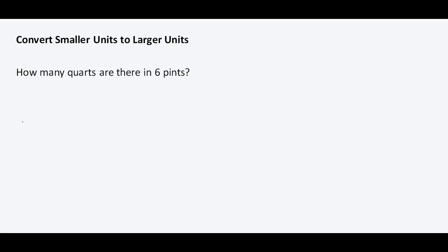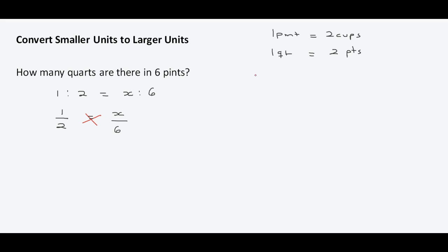Next question: how many quarts are there in 6 pints? We know that 2 pints make 1 quart, so the ratio of pints to quarts is 2 to 1. So 1 over 2 is equal to x over 6. Cross multiplying gives us 2 times x equal to 6 times 1. Dividing both sides by 2, x equals 3. So 6 pints equals 3 quarts.